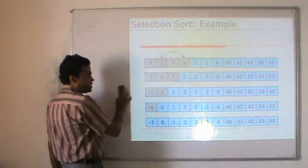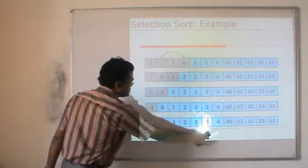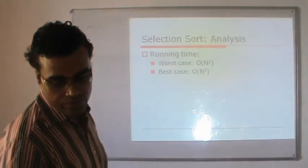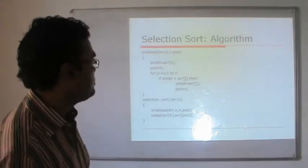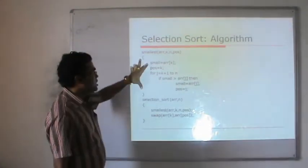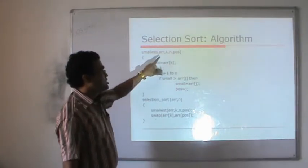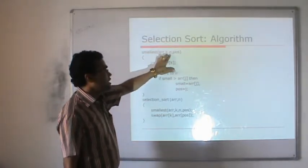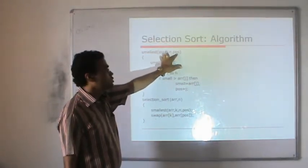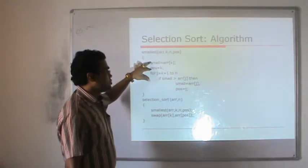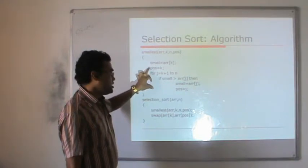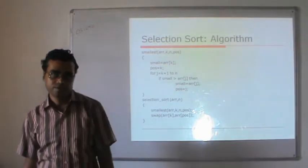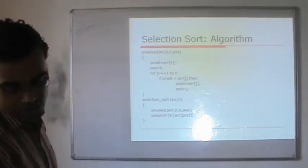This is the algorithm for selection sort. We have a function for finding the smallest element from position k to n in the array. The starting position is k, n is the total number of elements, and we find the position of the smallest. Once found, we interchange it to its proper position, and this way we perform selection sort.